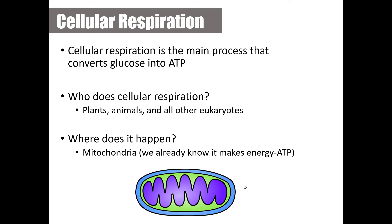Cellular respiration is the main process that converts glucose into ATP. Our bodies cannot use carbohydrates or glucose as energy directly — it must be converted into ATP first. Cellular respiration is performed by plants, animals, and other eukaryotes. A common misconception is that plants do not do cellular respiration. Plants do undergo photosynthesis, but they also undergo cellular respiration.